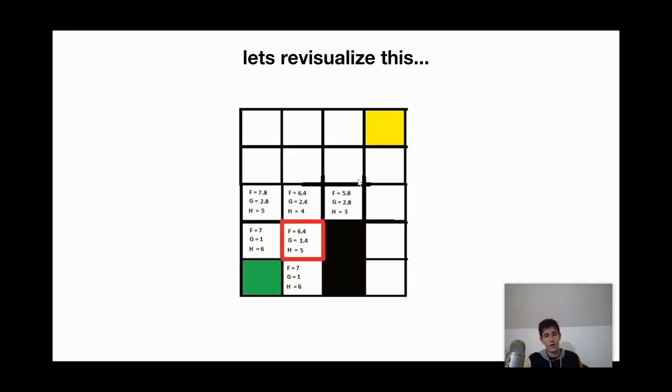And we ultimately get to the end goal, which has an H value of zero. Because when we get to our goal node, the H value is equal to zero. Pretty cool, right? This is awesome.